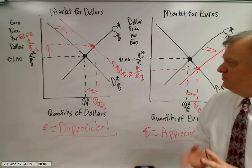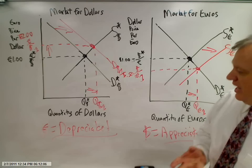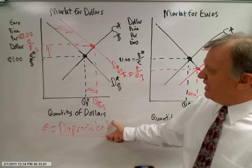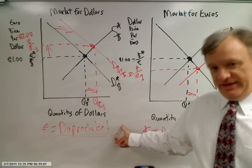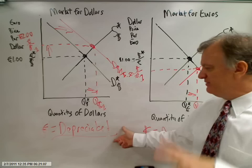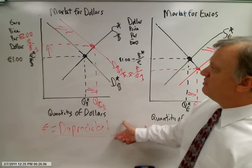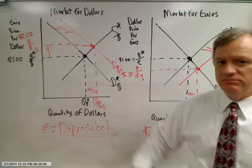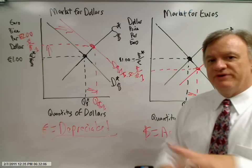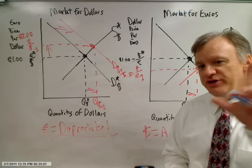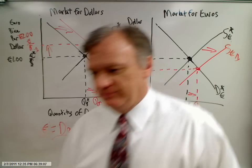Does this make sense? In subsequent videos we are going to look at how this change in relative values of currencies affects imports and exports. That'll be an extension of another lesson. In just a second, I'm going to do another video to do the reciprocal: U.S. financial assets less desirable, foreign financial assets more desirable — what's the corresponding effect? Although you can probably guess right now, I'm going to do it anyway. Thank you.